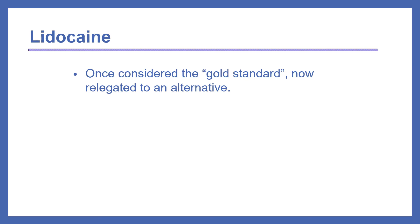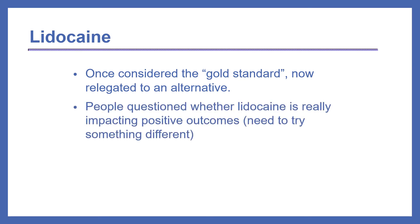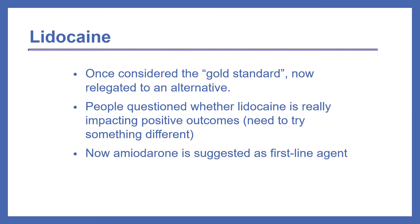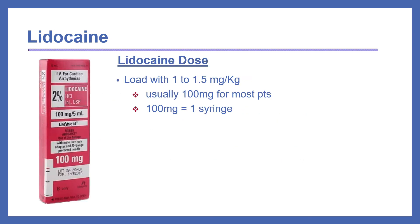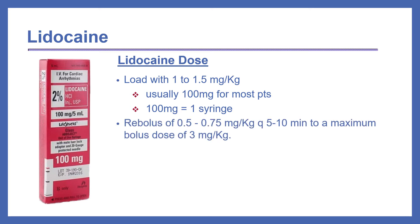Lidocaine was once considered the gold standard antiarrhythmic, but is now relegated to an alternative, as questions arose about whether it truly impacts positive outcomes. Amiodarone is now the first-line agent, but lidocaine remains in the guidelines as an alternative. For the lidocaine dose, we load the patient with 1 to 1.5 mg per kg — usually 100 mg for most patients, equivalent to one pre-filled syringe. We then rebolus with 0.5 to 0.75 mg per kg every 5 to 10 minutes to a maximum bolus dose of 3 mg per kg.